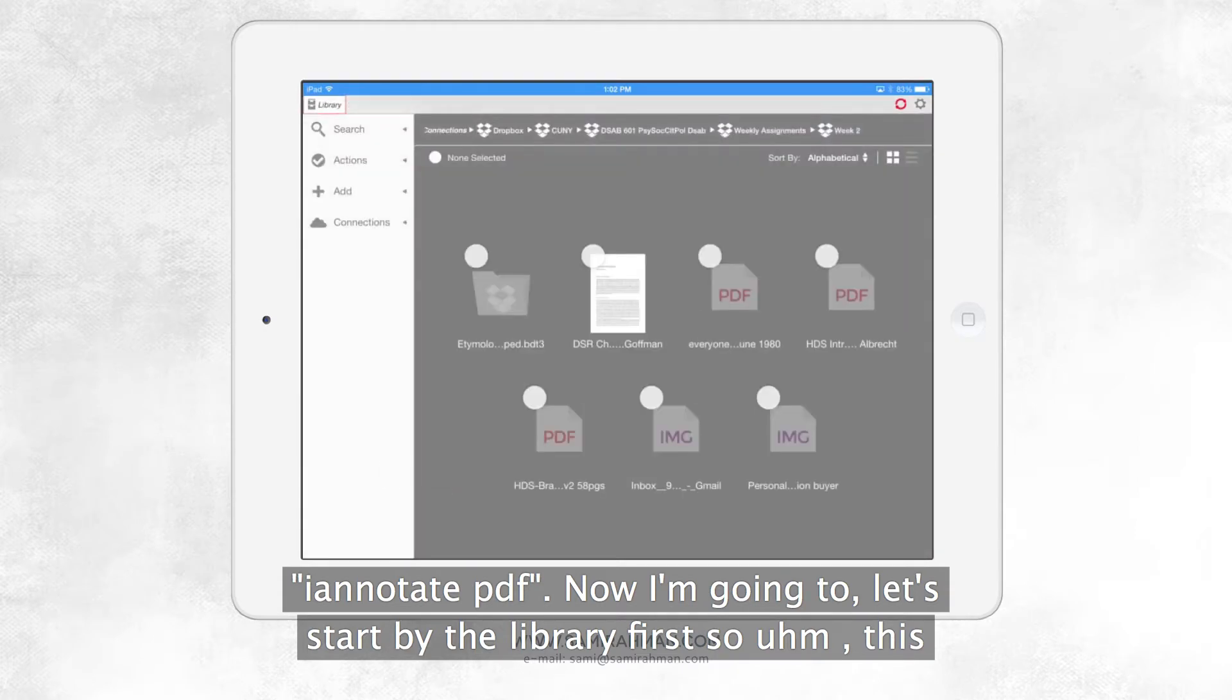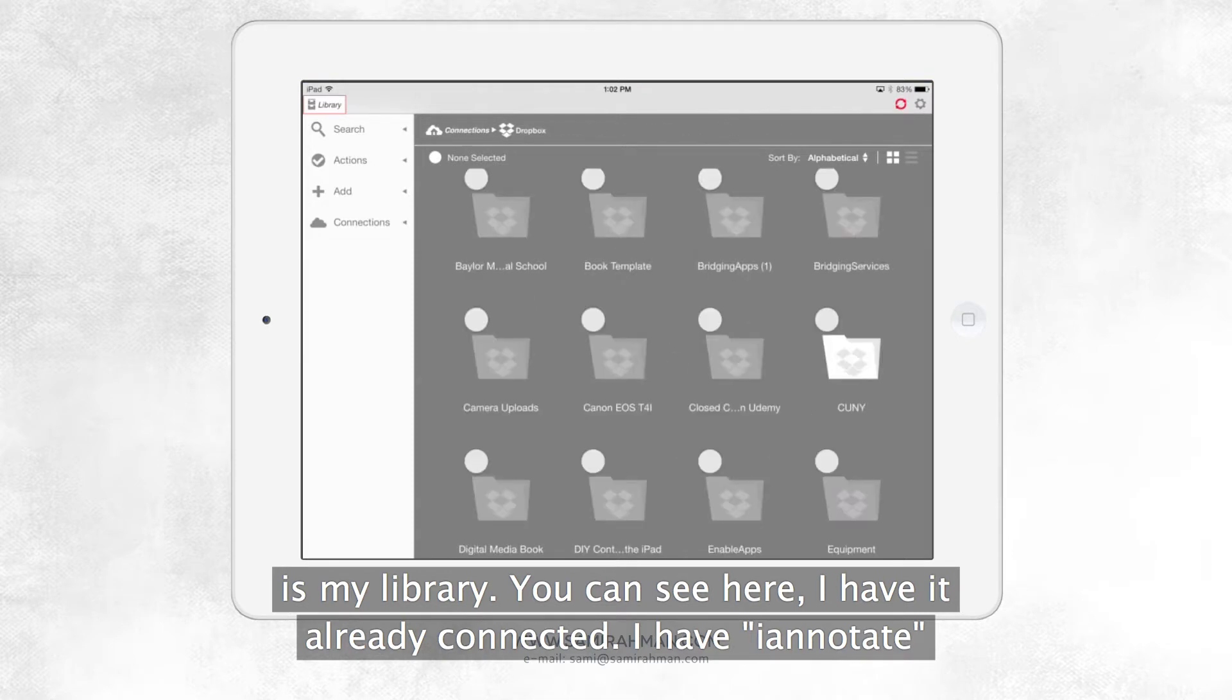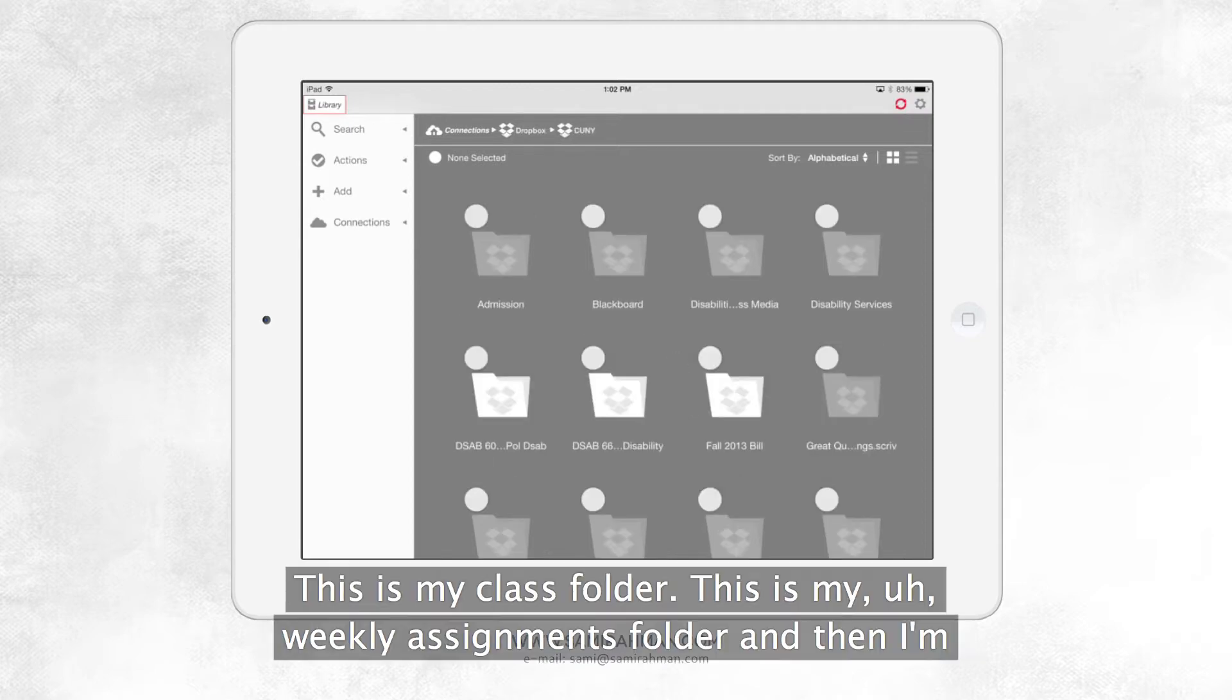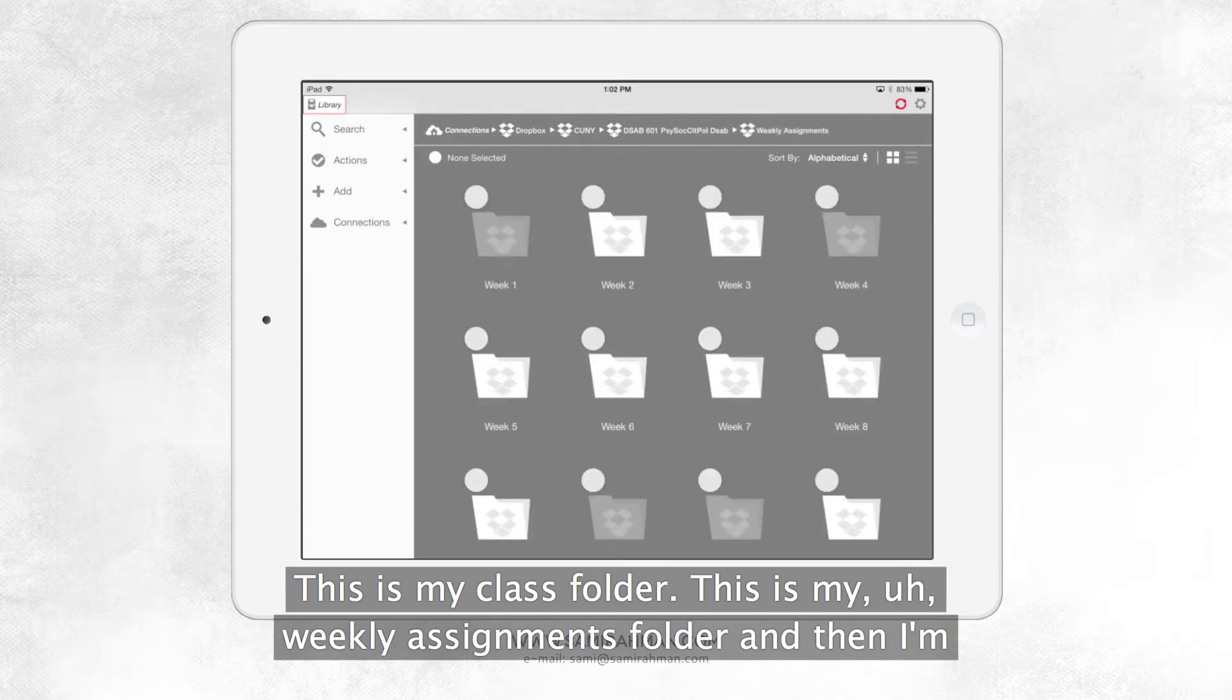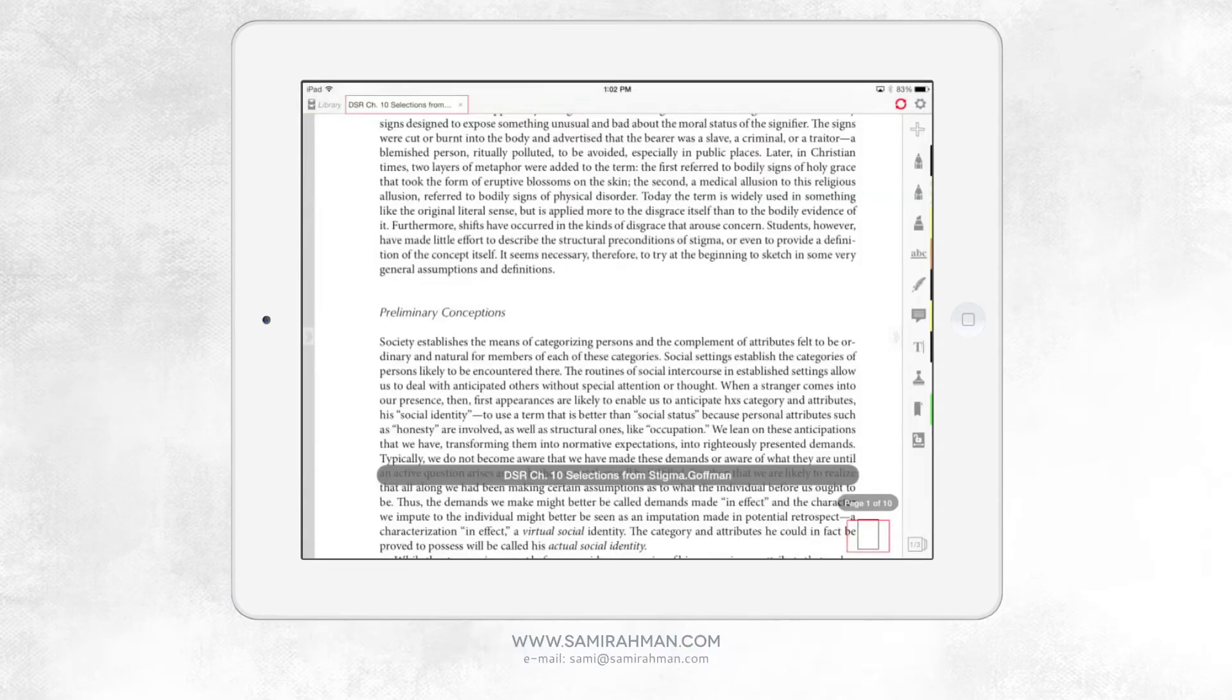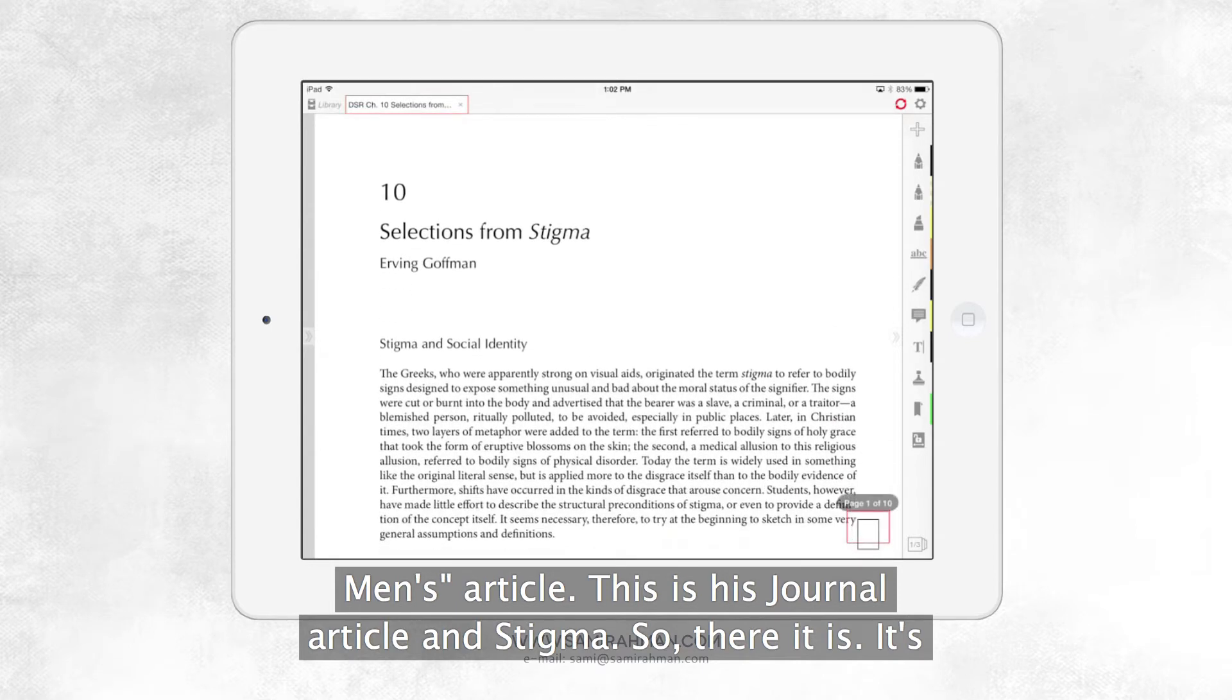This is my library. You can see here I have iAnnotate already connected to Dropbox. So this is my Dropbox, this is my university folder, this is my class folder, this is my weekly assignments folder. And then I'm going to go to week two. And in week two, I have an article. This is Goffman's article, his journal article on stigma.